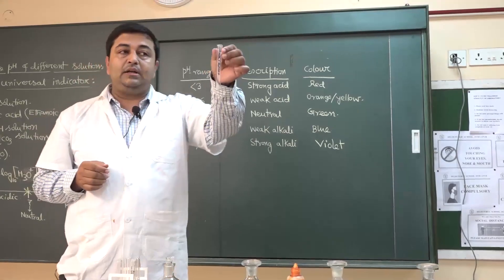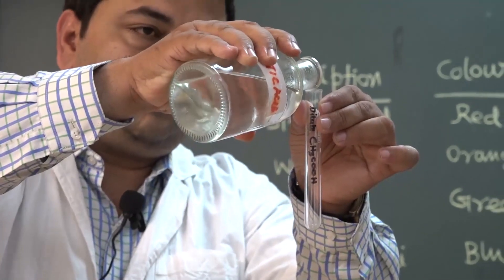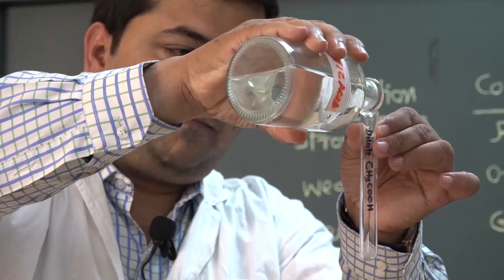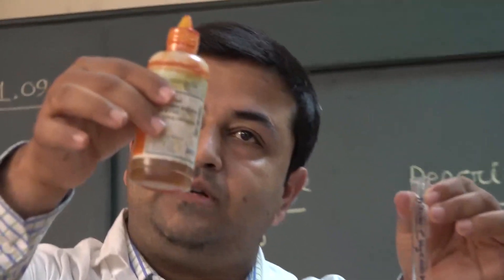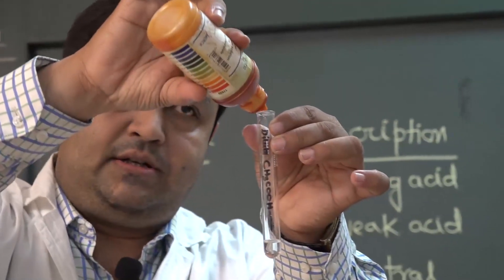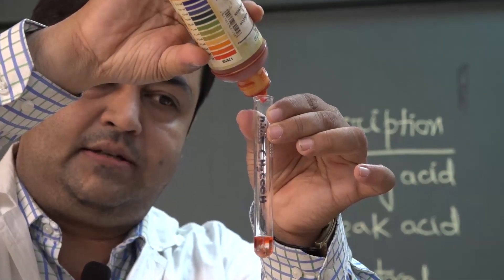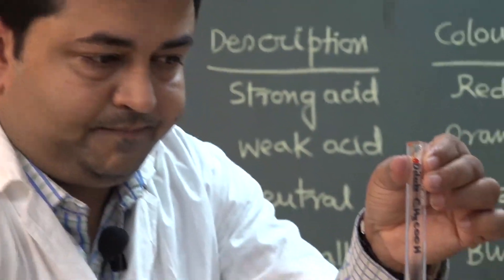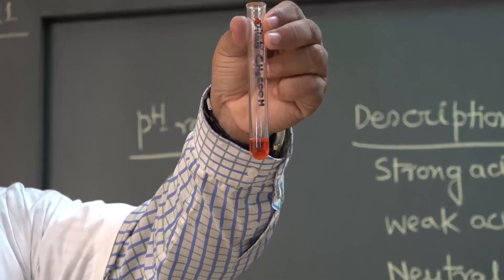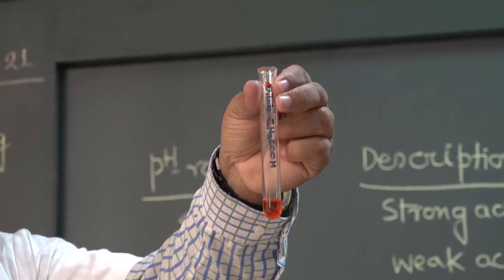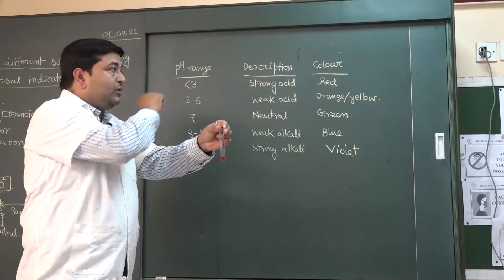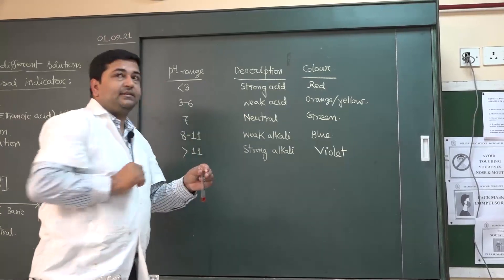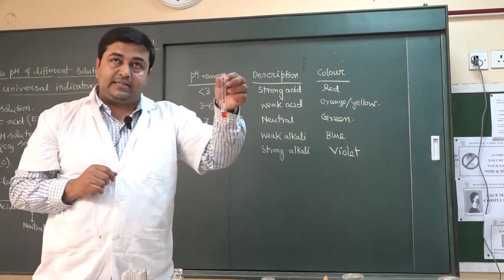Next is acetic acid. In the test tube I am adding one or two drops of universal indicator. The color obtained is orange. According to the table, if the pH value is from 3 to 6 the color will come orange, meaning it is a weak acid. So acetic acid is confirmed as a weak acid.